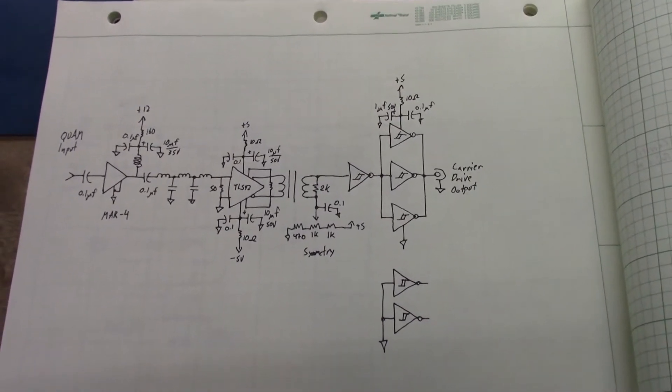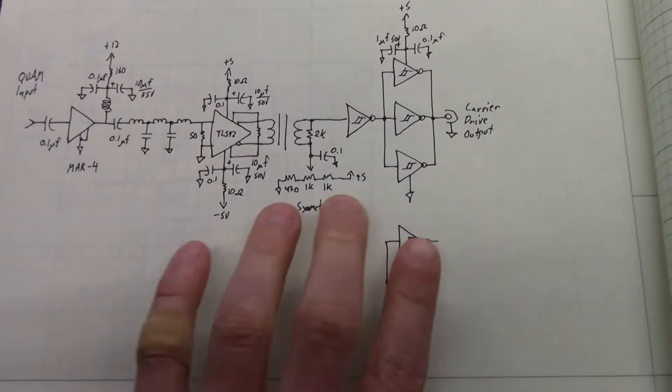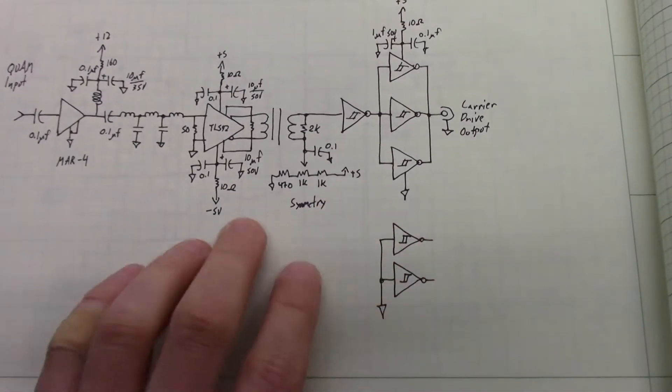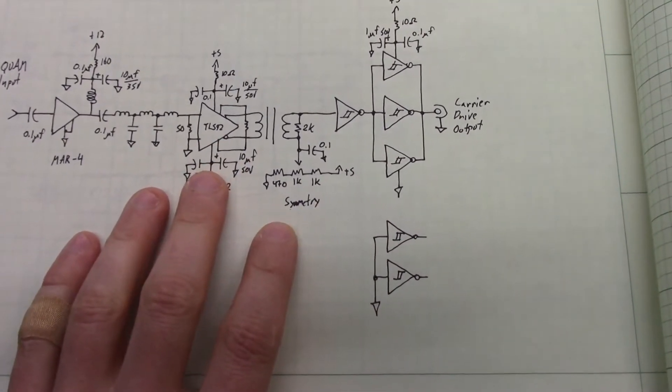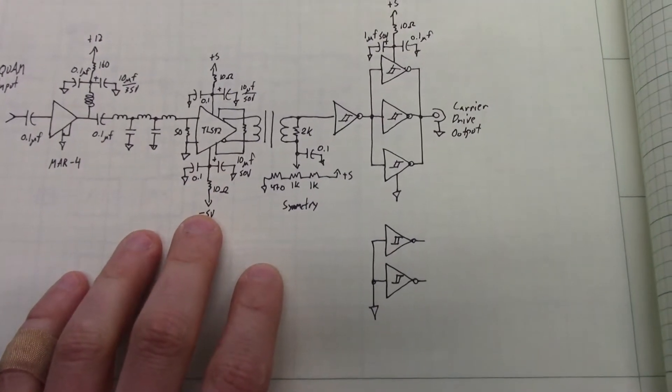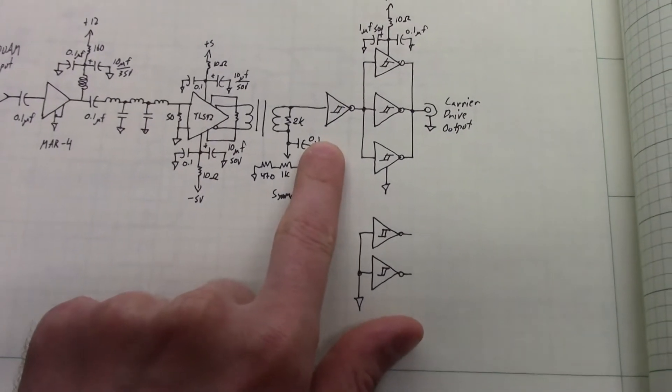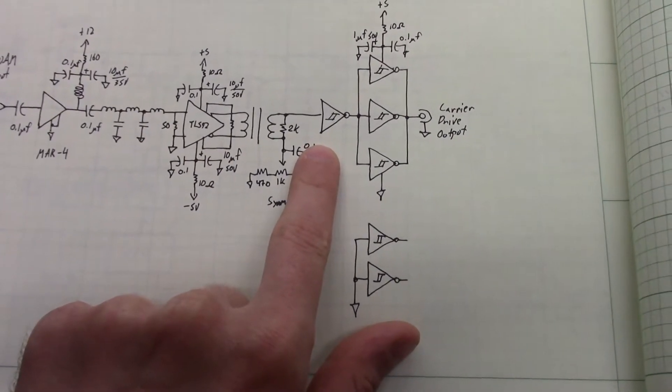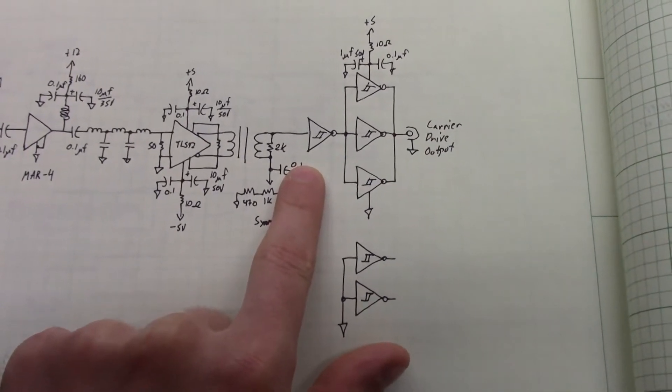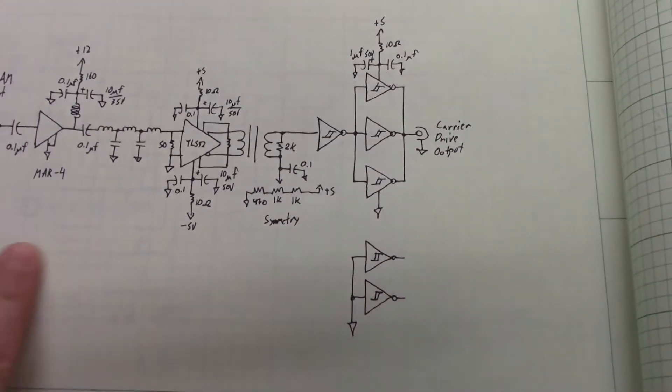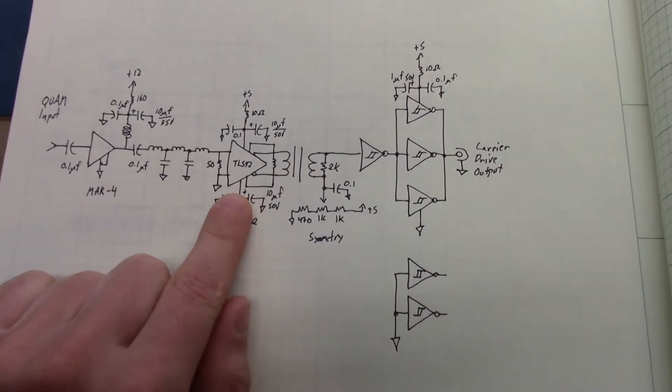After some playing around with schematics and design and some calculations, this is the design I came up with and what we're going to breadboard. The circuit we prototyped is this portion right here, basically from the output of the TL-592, which is a differential video amplifier. We got enough voltage gain to get this limiter to fully recover an amplitude modulated signal and give us just the carrier phase information.